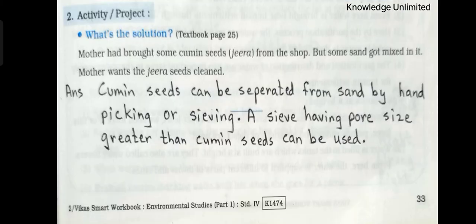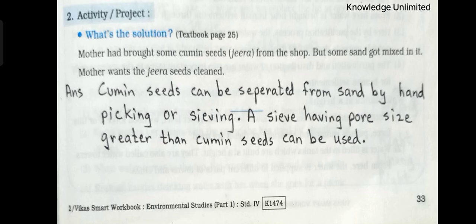Now let's see the next part that is activity project. What's the solution? Mother had brought some cumin seeds (jeera) from the shop but some sand got mixed in it. Mother wants the jeera seeds cleaned. Answer: Cumin seeds can be separated from sand by hand picking or sieving. A sieve having pore size greater than cumin seeds can be used. So children, you can copy these notes in your workbook. That's all for lesson number four — Water Safe for Drinking.